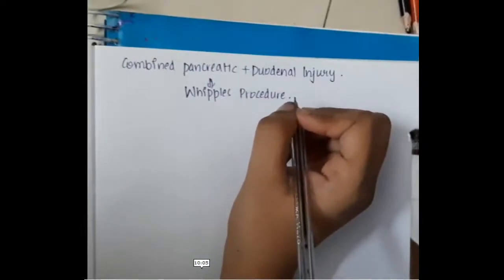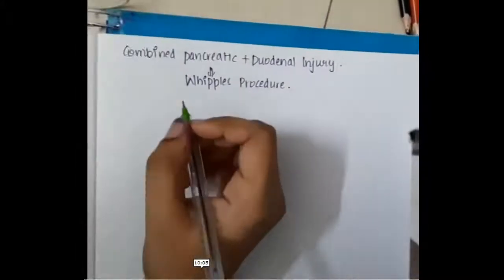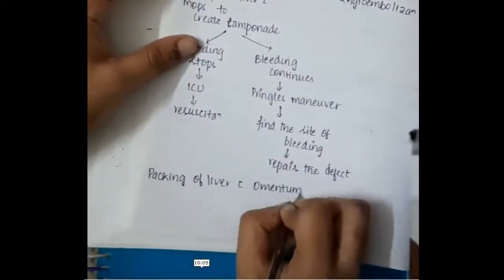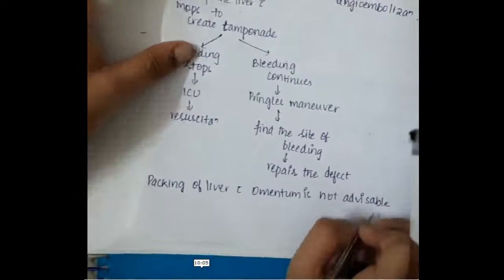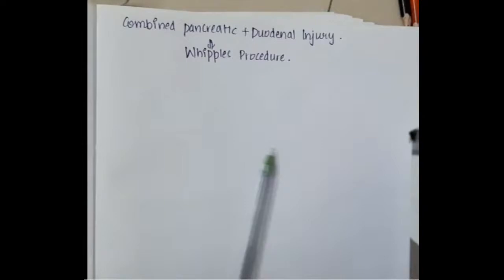If there is combined pancreatic and duodenal injury, Whipple's procedure is done. In Beger's procedure, you are performing a pancreatic jejunostomy, and also anastomosing a part of jejunum with jejunum — a jejunojejunostomy. The duodenum or any other part of the small intestine is not touched.